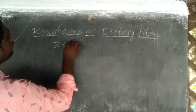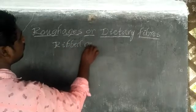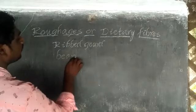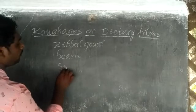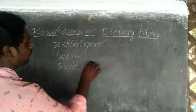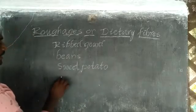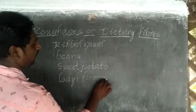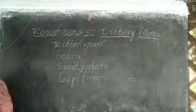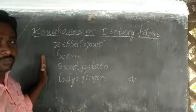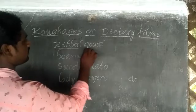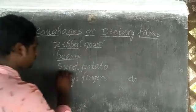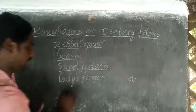We collect some vegetables like ridgegourd, beans, sweet potato, and lady's fingers, and so on.